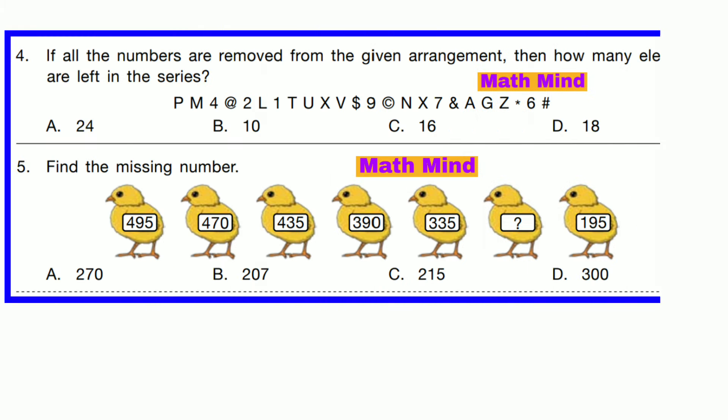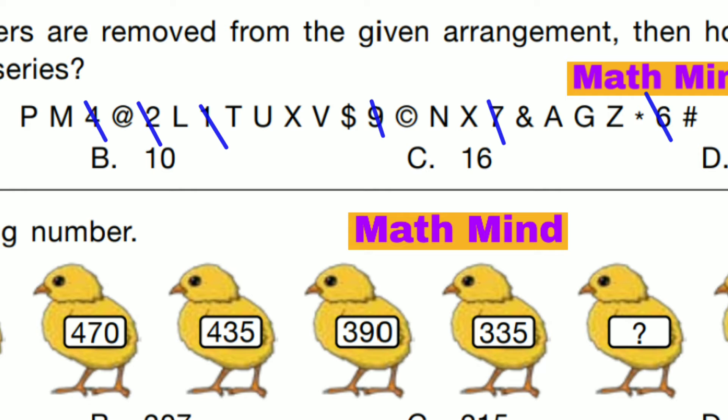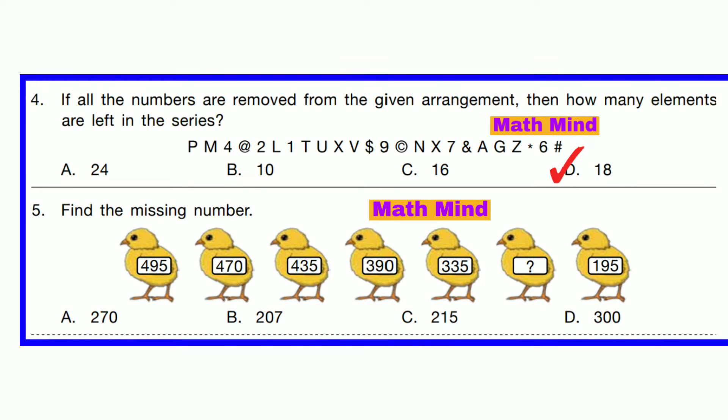Question number 4. If all numbers are removed from the given arrangement, then how many elements are left in the series? These are the given figures. Removing numbers, we get the remaining figures. Counting the figures, we get 18. So option D is correct: 18.